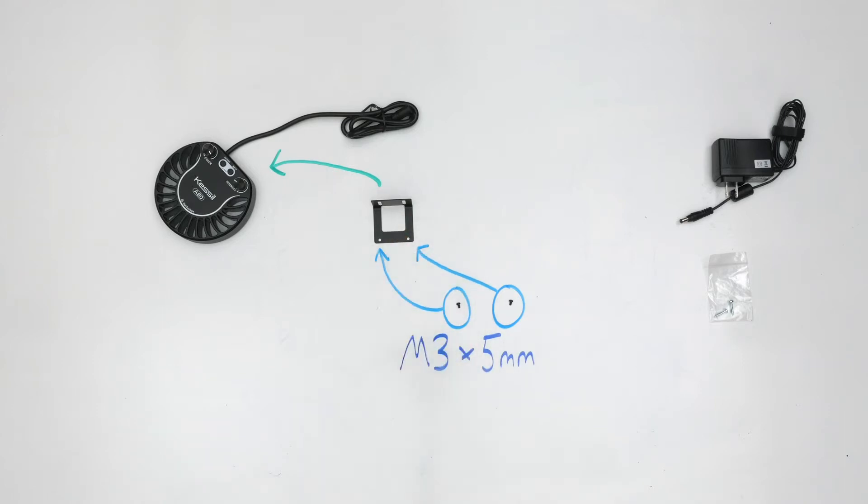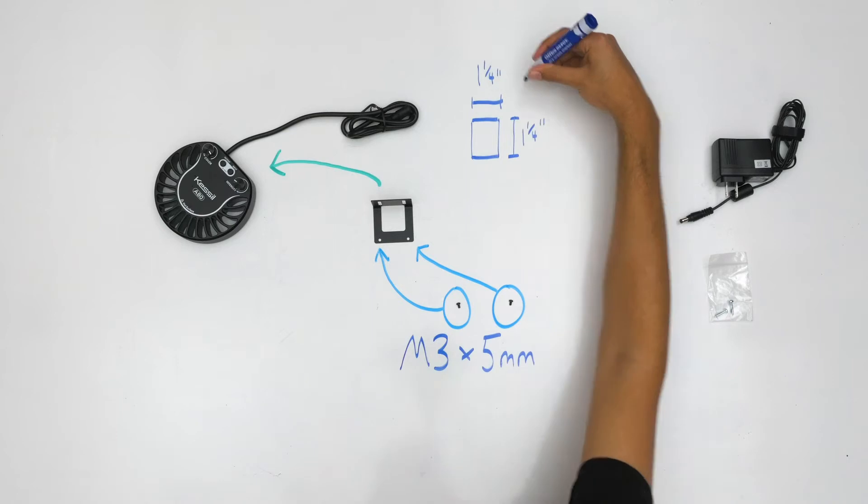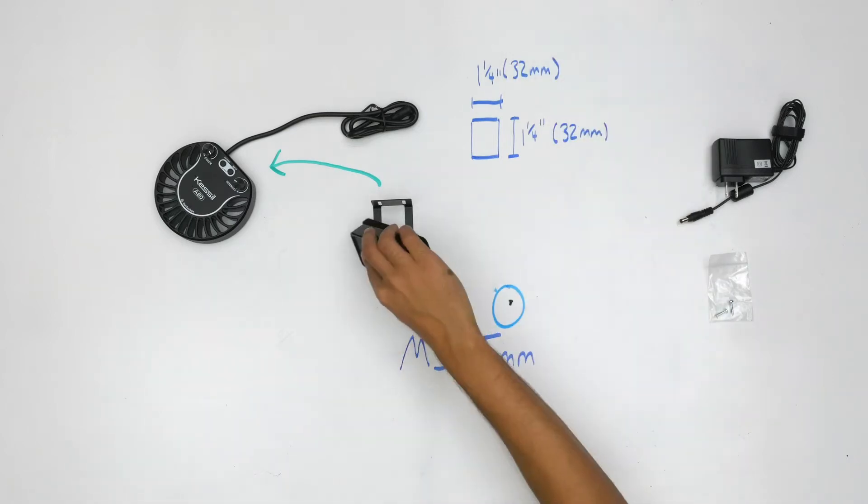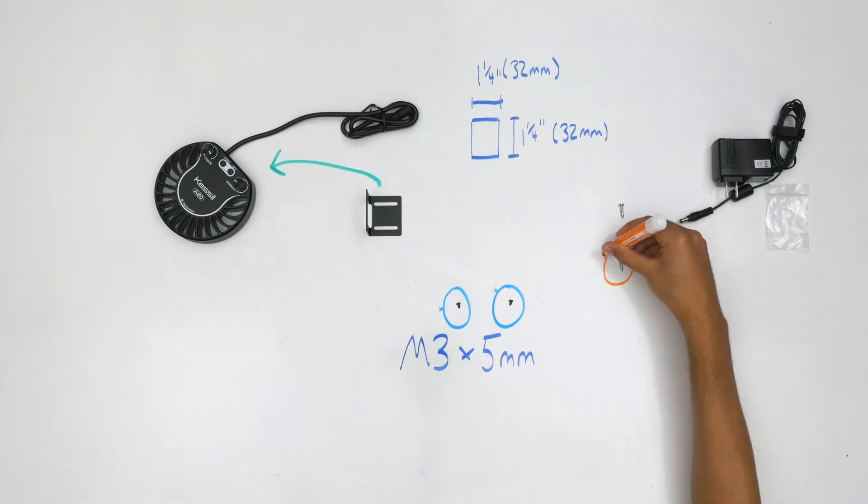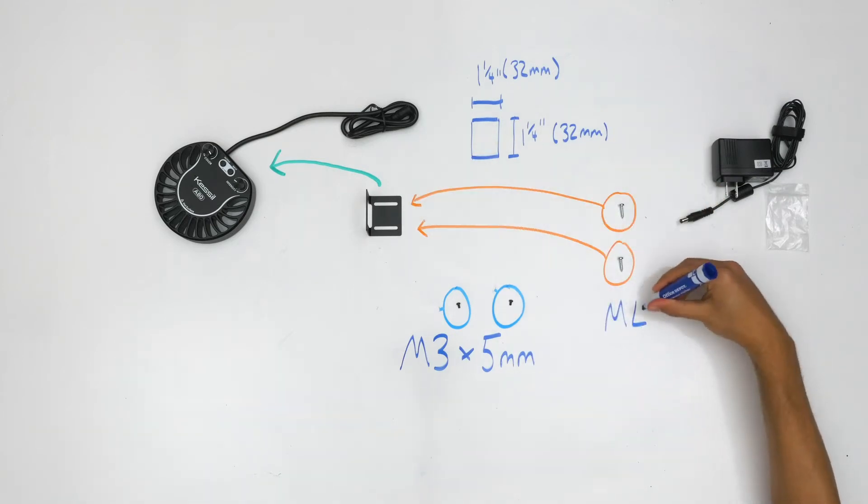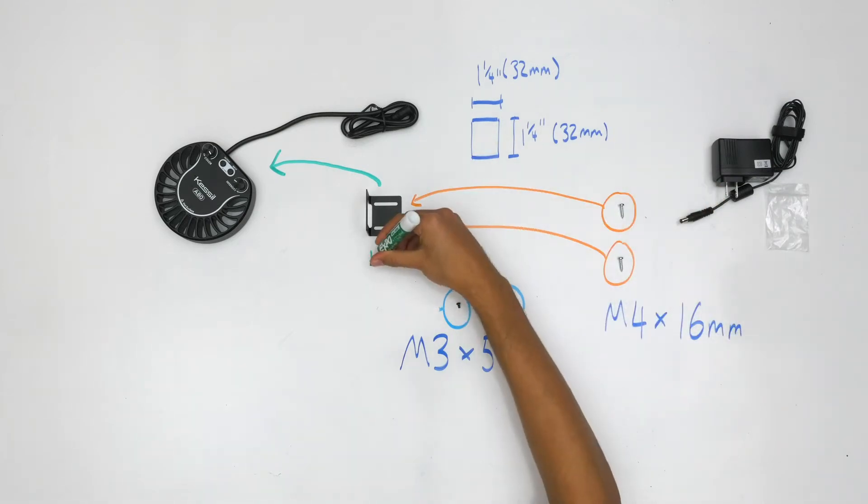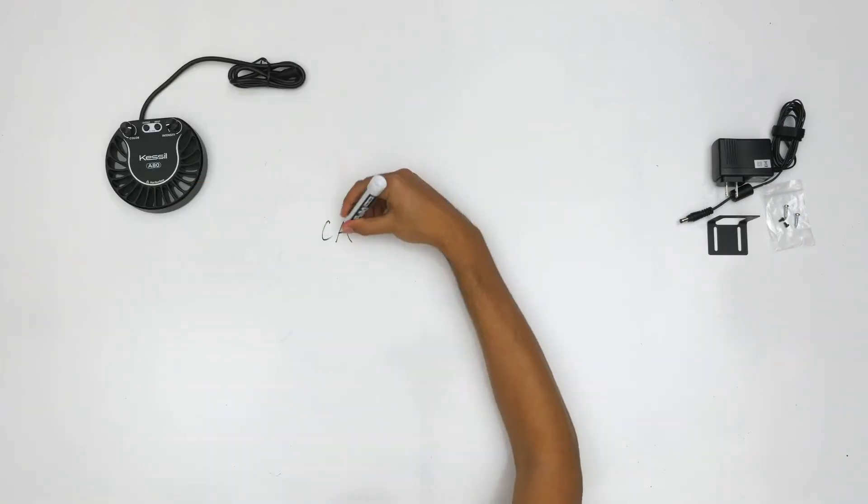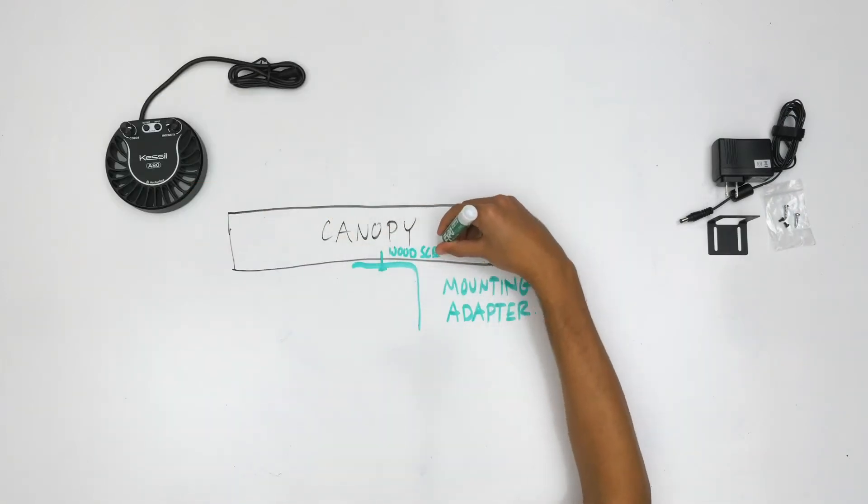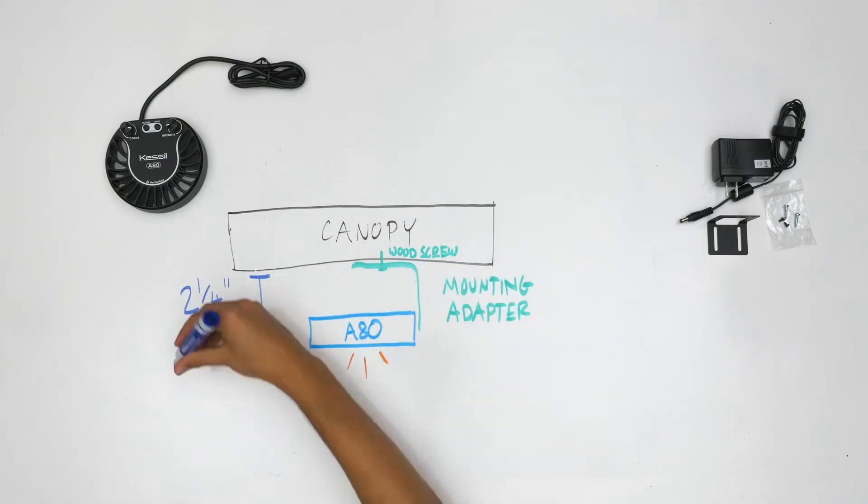The opening that the control cables run through is 1 and 1 quarter inch by 1 and 1 quarter inch, and the wood screws that attach the mounting adapter to the canopy or other surface are Phillips size M4 by 16 millimeters. The slats run for almost the full length of the adapter, allowing 1 inch of room for the A80 to slide back or forth based on specific mounting requirements. When mounted to an overhanging surface, the distance between the canopy and the bottom of the A80 Tuna Blue is 2 and 1 quarter inches.